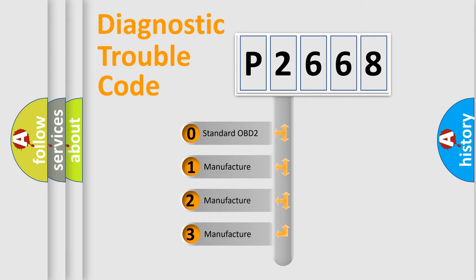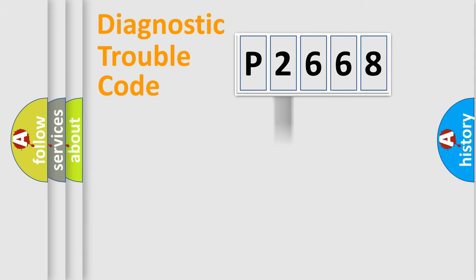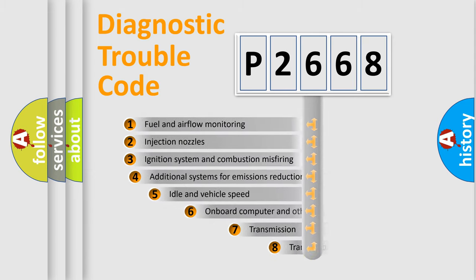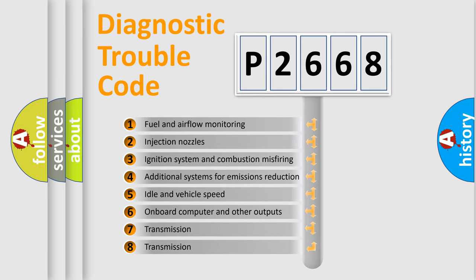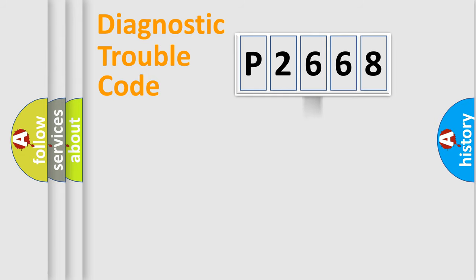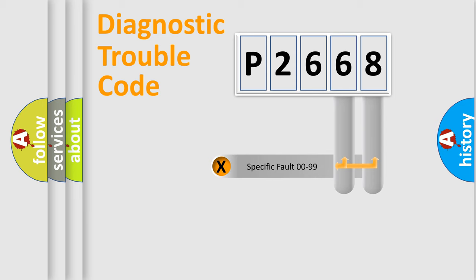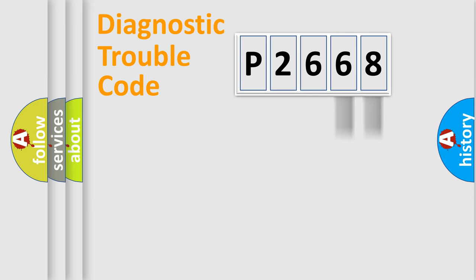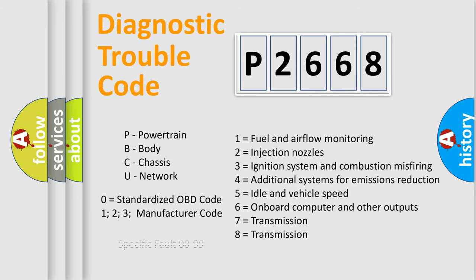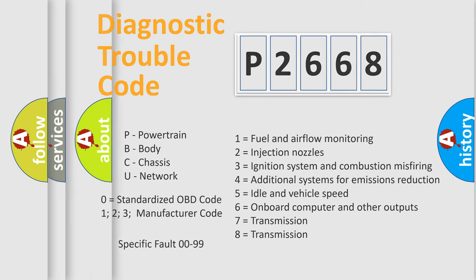If the second character is expressed as zero, it is a standardized error. In the case of numbers 1, 2, or 3, it is a more specific expression of a car-specific error. The third character specifies a subset of errors. This distribution is valid only for the standardized DTC code. Only the last two characters define the specific fault of the group, and this division is valid only when the second character is zero.